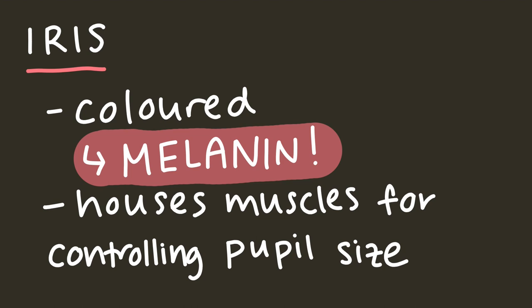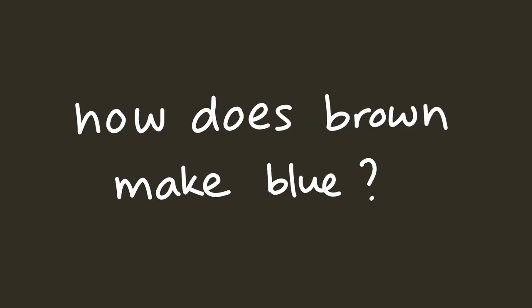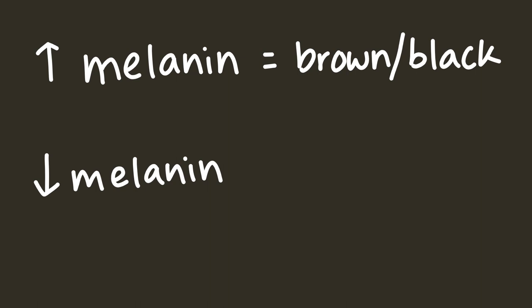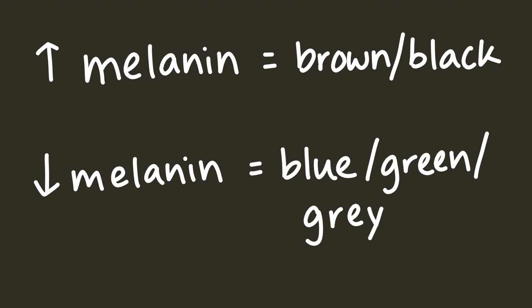Now you might be wondering, hold on, how can a brown pigment result in blue eyes? Well, when our irises have a lot of melanin, our eyes look brown or black. But when our irises have small amounts of melanin concentrated in the back, the unpigmented parts of the iris end up giving the eye a blue, green, or gray color.